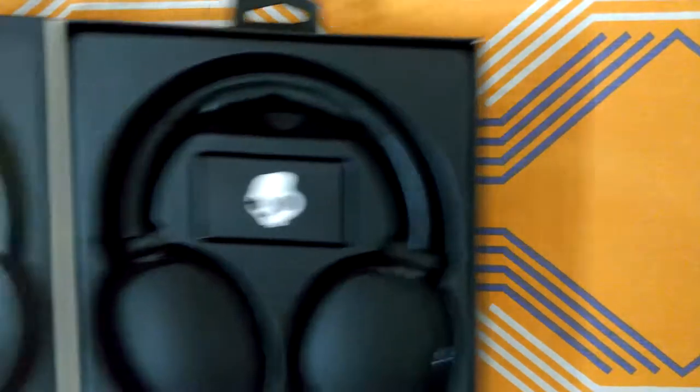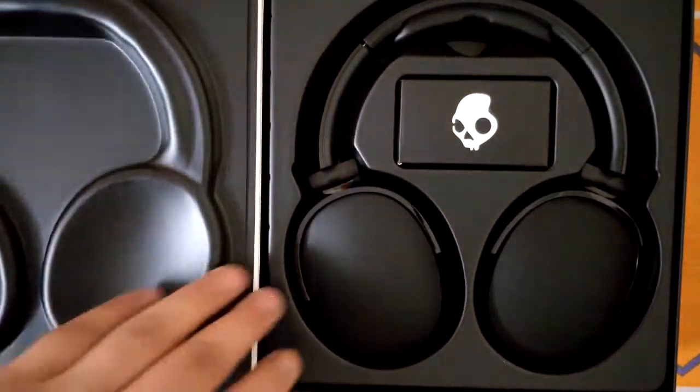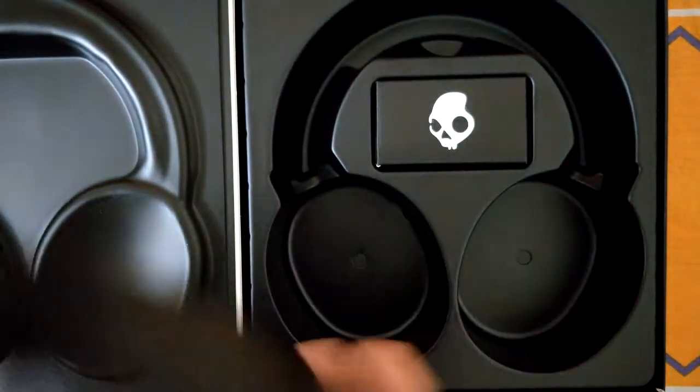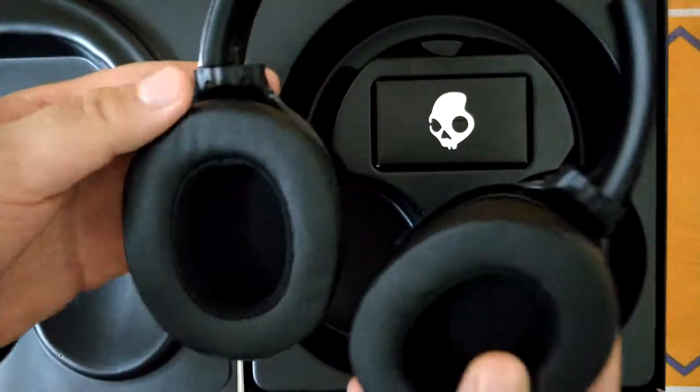Inside the box we have the headphones itself. Let's check what's inside this box, but first let's remove these headphones. Let's keep them on the side, they look pretty nice. And inside the box let's see what do we have here.